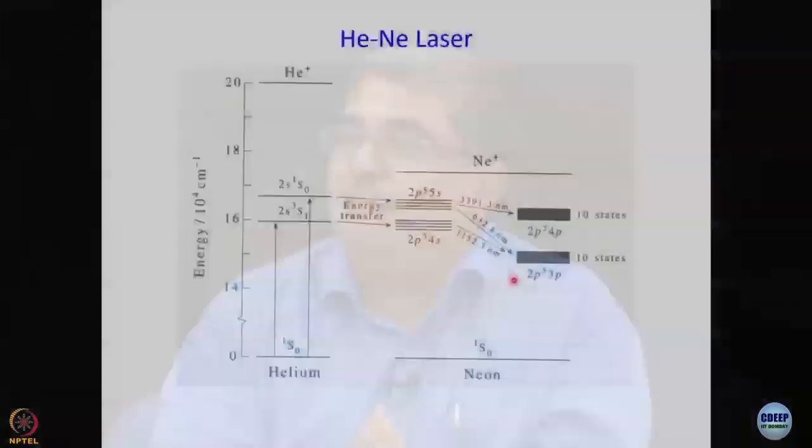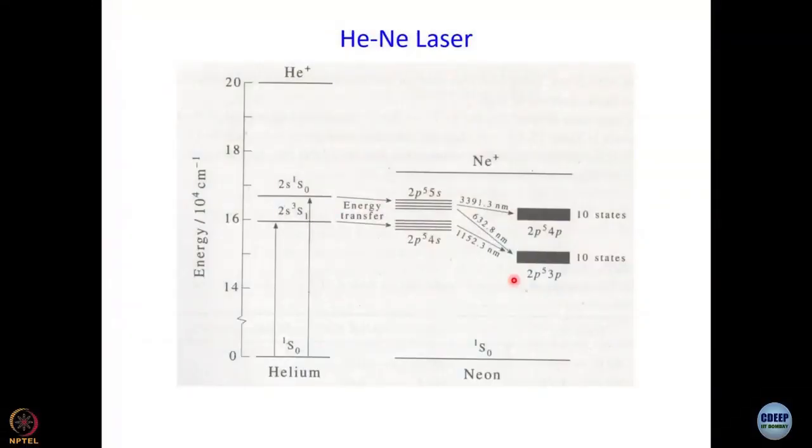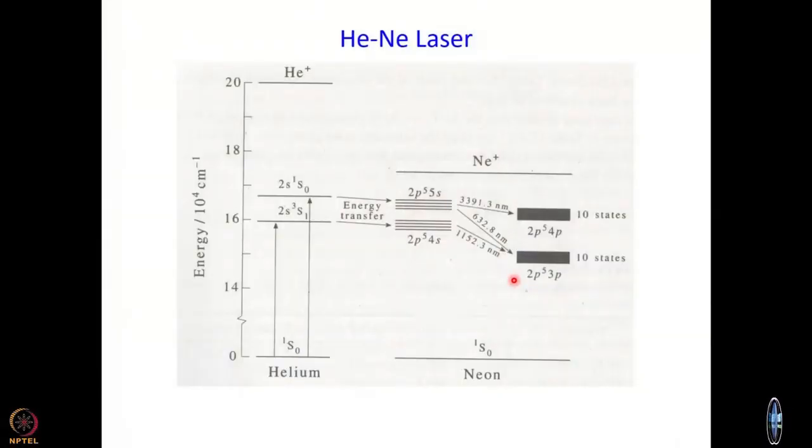Similarly, if you now go and see the argon ion laser, you can understand whether you expect it to be CW or pulsed, whether you expect one line or many lines. If you see the Nd:YAG laser energy diagram, you will be able to follow after this discussion. That is why before going into more complicated topics, it is better to discuss HeNe laser at least once.